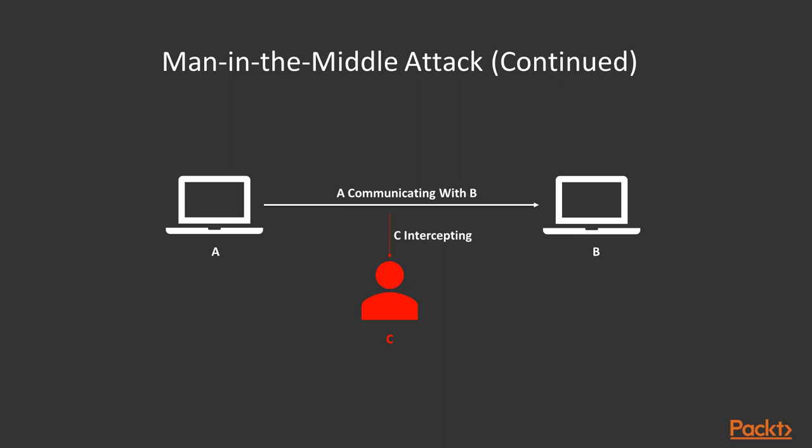Here is the process: Machine A is communicating with Machine B, and attacker C is trying to intercept between A and B. When A sends data packets to Machine B, C can capture those data packets, observe them, and extract the information available within them — including sensitive data like usernames and passwords.